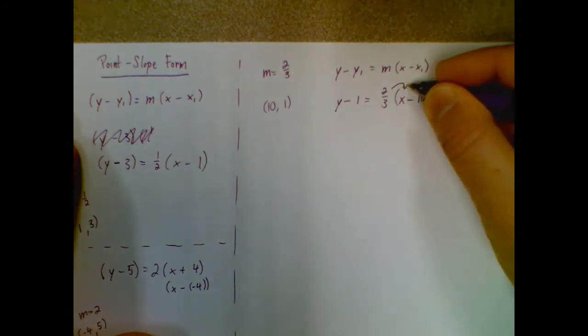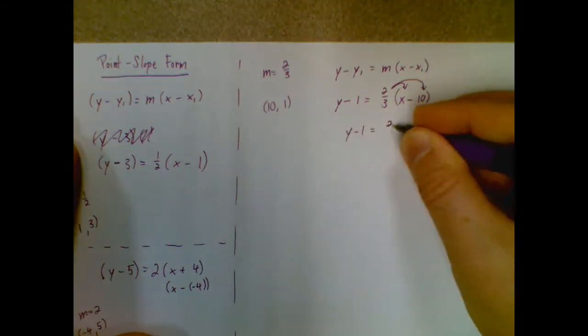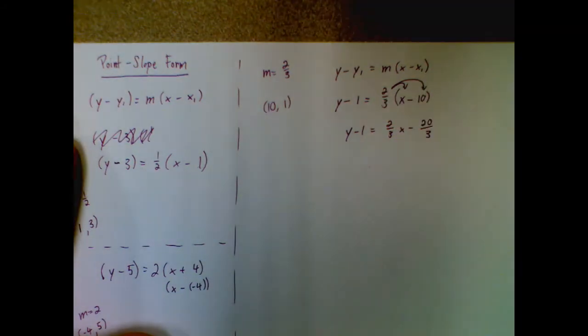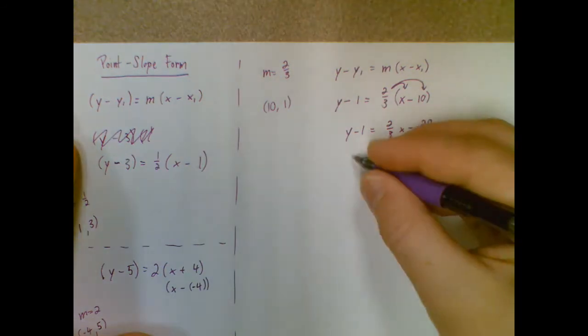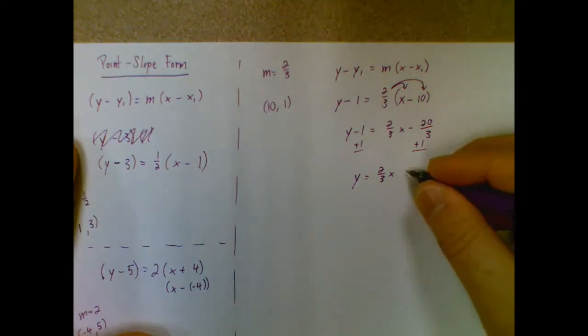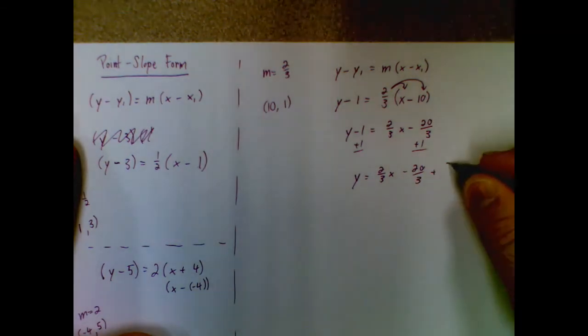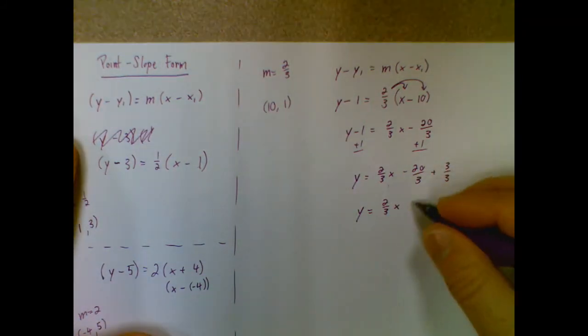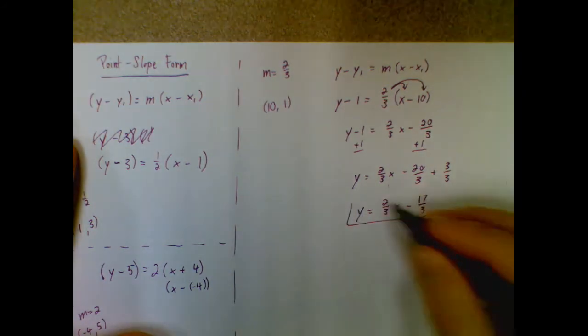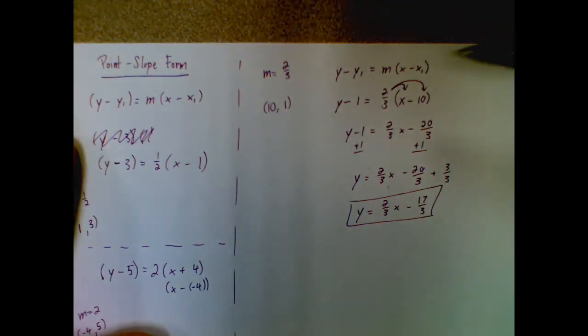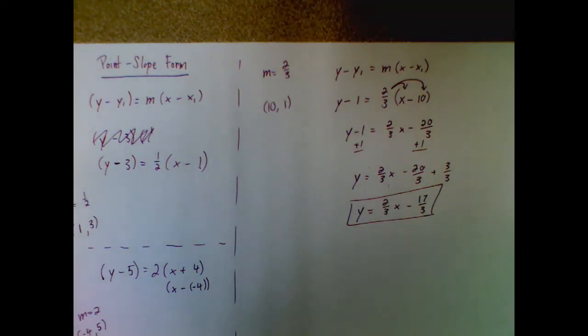So in order to do that, I can distribute my two-thirds here. That gives me two-thirds x minus 20 over 3. Because remember, this is like 10 over 1. So it only goes to the top, not the bottom. So 20 over 3. Then I'm going to add 1 to both sides. So this is a little trickier. Remember, you do need a common denominator. So if I'm adding 1, I want that to be 3 over 3. Because that reduces to 1. And I have those 3s on the bottom. So my final answer then for this one, I don't do anything here. But I have negative 20 plus 3. So minus 17 over 3. That's my equation of my line that has a slope of two-thirds, which it does. And it goes through the point 10, 1.